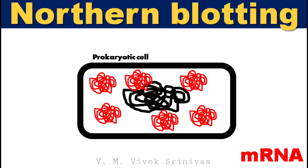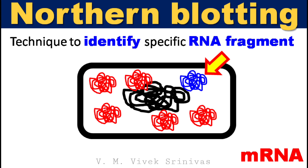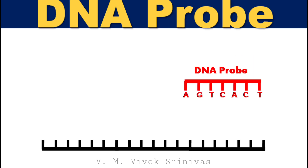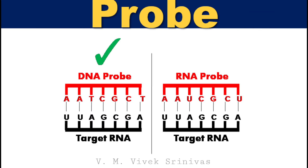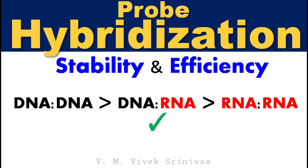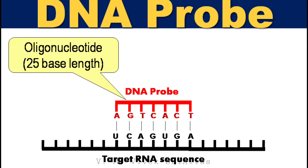Northern blotting is a technique used in molecular biology to identify a specific RNA fragment from a mixture of total cellular RNA molecules. In this technique, a DNA probe with a specific known sequence is used to identify the RNA sequence. DNA probes are preferred over RNA probes because the stability and efficiency of DNA to RNA hybridization is better than RNA to RNA hybridization. These probes are oligonucleotides with a minimum of 25 complementary bases in length to the target sequence.